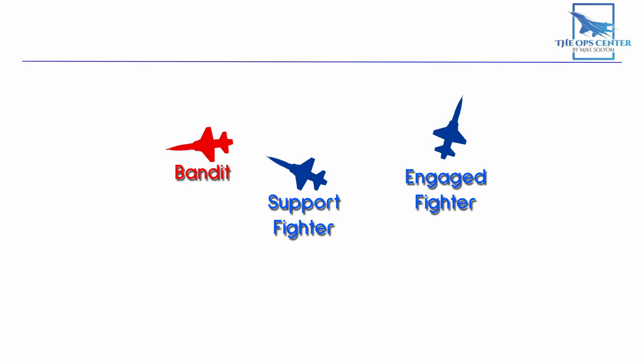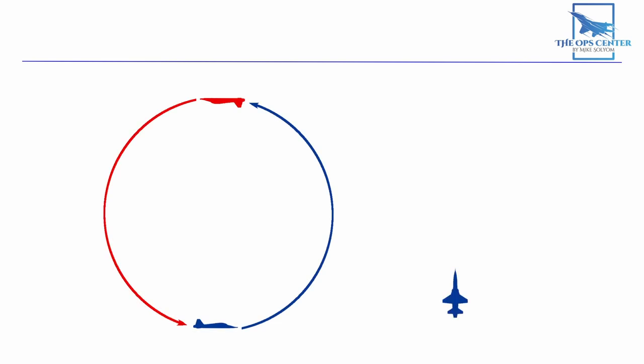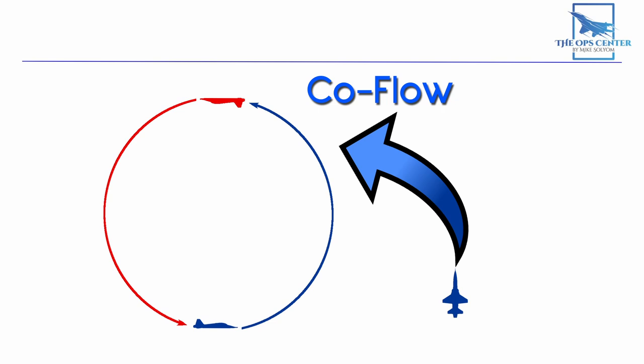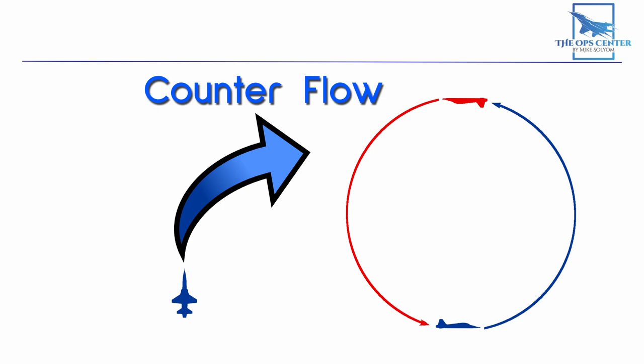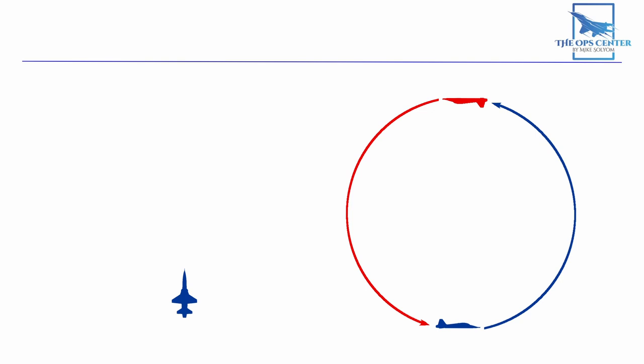As a support fighter, we need to maintain visual with the engaged fighter in addition to keeping tally on the bandit. In a scenario where the support fighter is on the right with the bandit and engaged fighter circling to the left, this is easy. Just turn with the flow of the fight, which is called co-flow, and you can easily keep your eyes on both of them while maneuvering for a shot on the bandit. What about if you're on the left side? Then you would turn the other direction, or counter-flow. This way you can keep both of them in sight without having them go across your tail, where you could potentially lose sight of one or both aircraft.